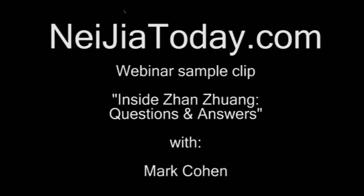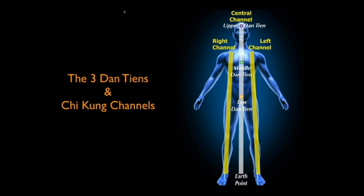Here we have the three channels and the three dantians — these are the three qigong channels. We have the central channel coming from the Baihui point, the crown point, down through the perineum and down into the place equidistant between the feet, the earth point.